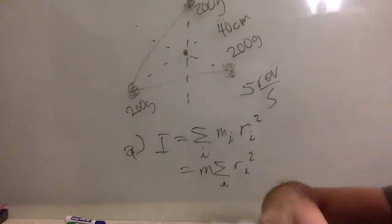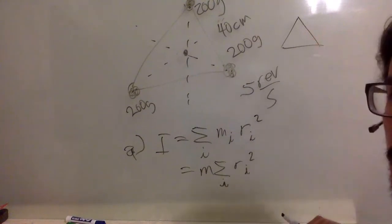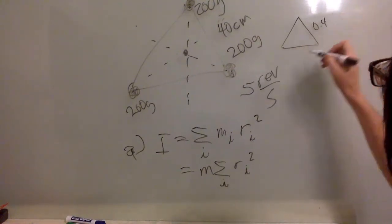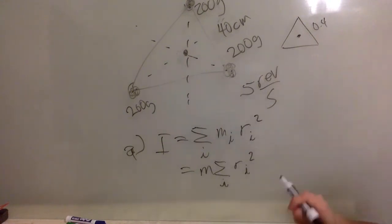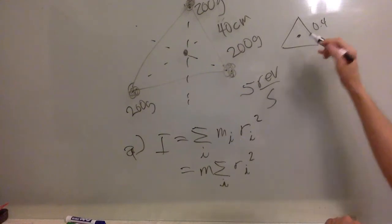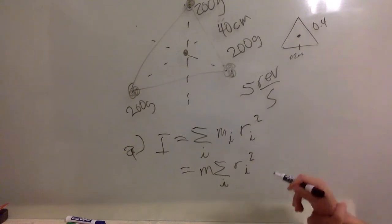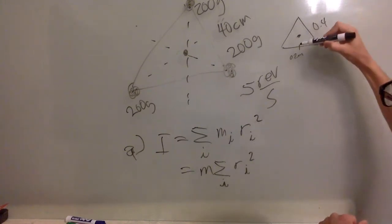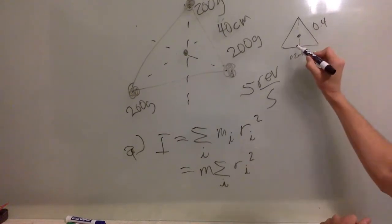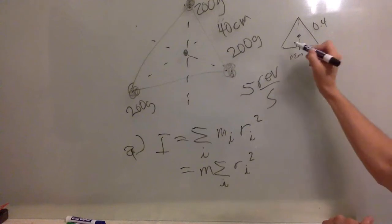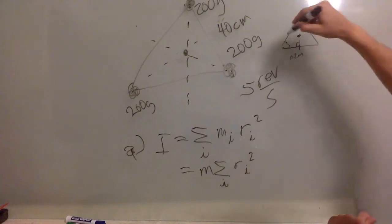Well, you have your triangle, looks like that, each one is 0.4, and you want to know what is this distance. Well, it is 0.2 meters from here.